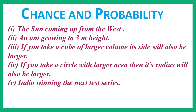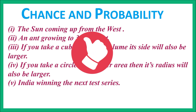From the above examples, we can conclude that there are situations in our life that are certain to happen, some that are impossible, and some that may or may not happen. The situation that may or may not happen has a chance of happening, and that chance of happening is called probability. So let us do exercise 3.4 and learn more about probability.